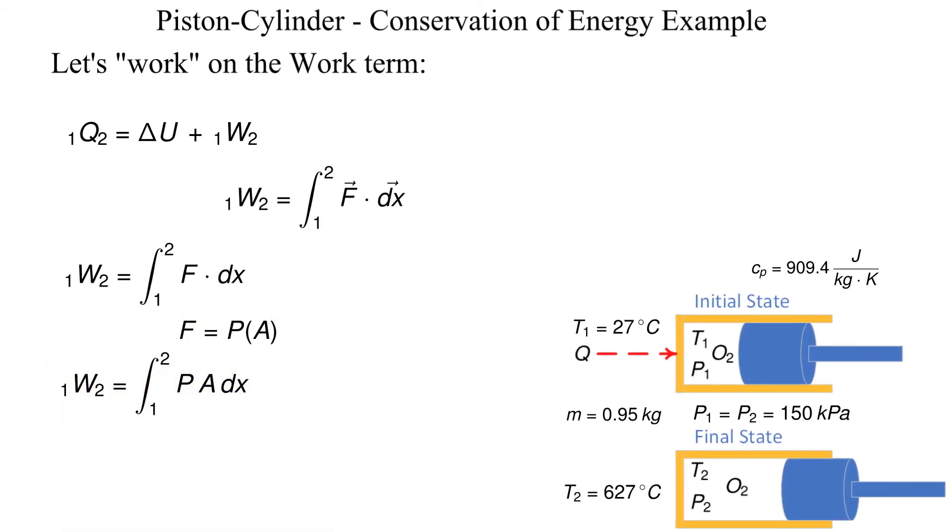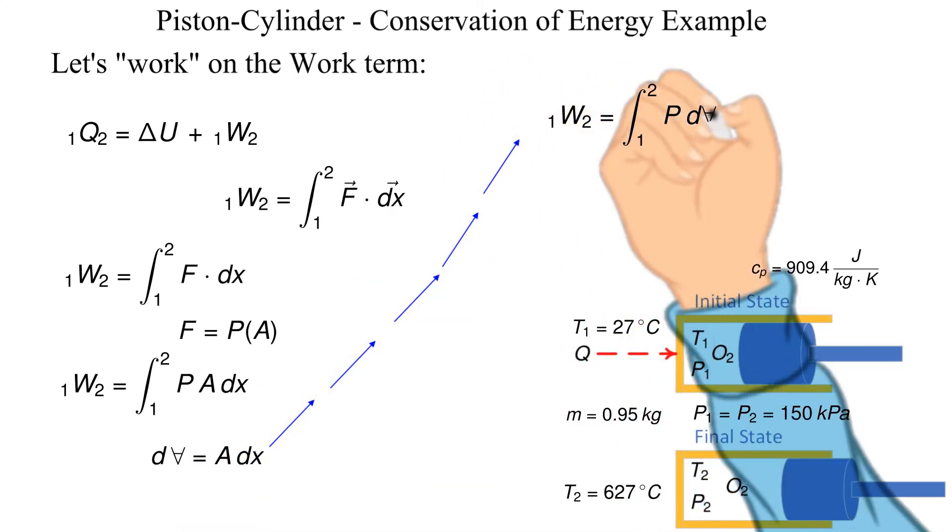We also know that the change in volume from state 1 to state 2 is equal to the area of the piston times dx or the change in position from state 1 to state 2. Substituting in the above and carrying out the integration we obtain an expression for work equal to the pressure times the change in volume.